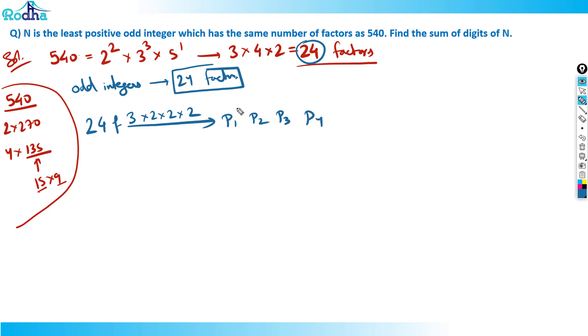P1 has factor 3, P2 has factor 2 so power 1, P3 has factor 2 so power 1, P4 has factor 2 so power 1. That's what we get factor. How do you get factor? Power plus 1. How do you get power? Factor minus 1. Now, so basically I want to know what is the minimum possible value here.